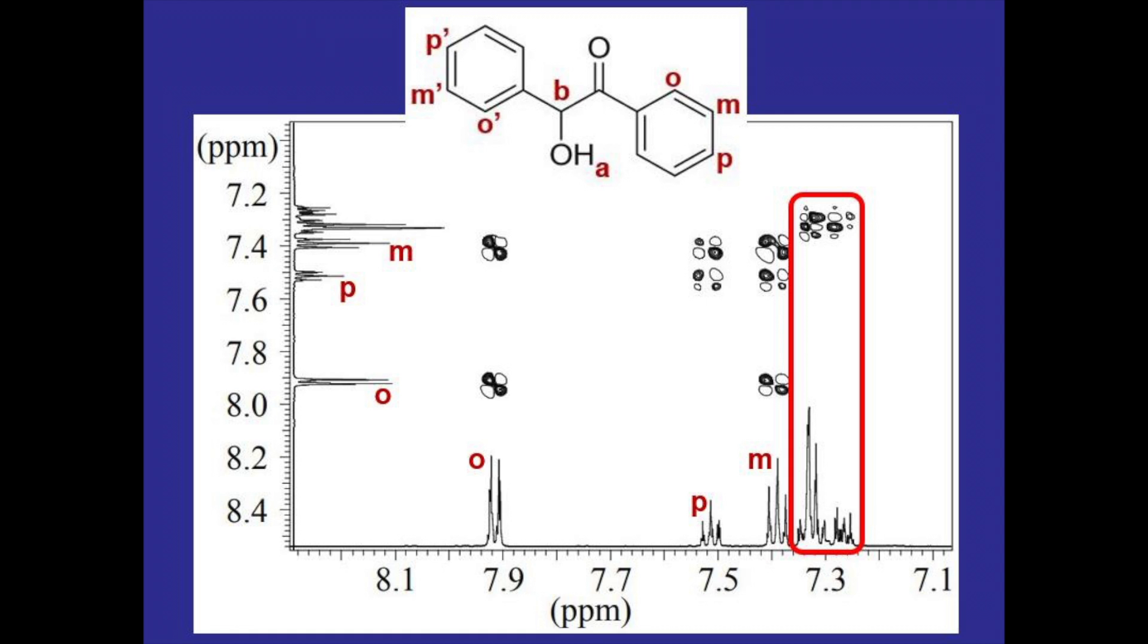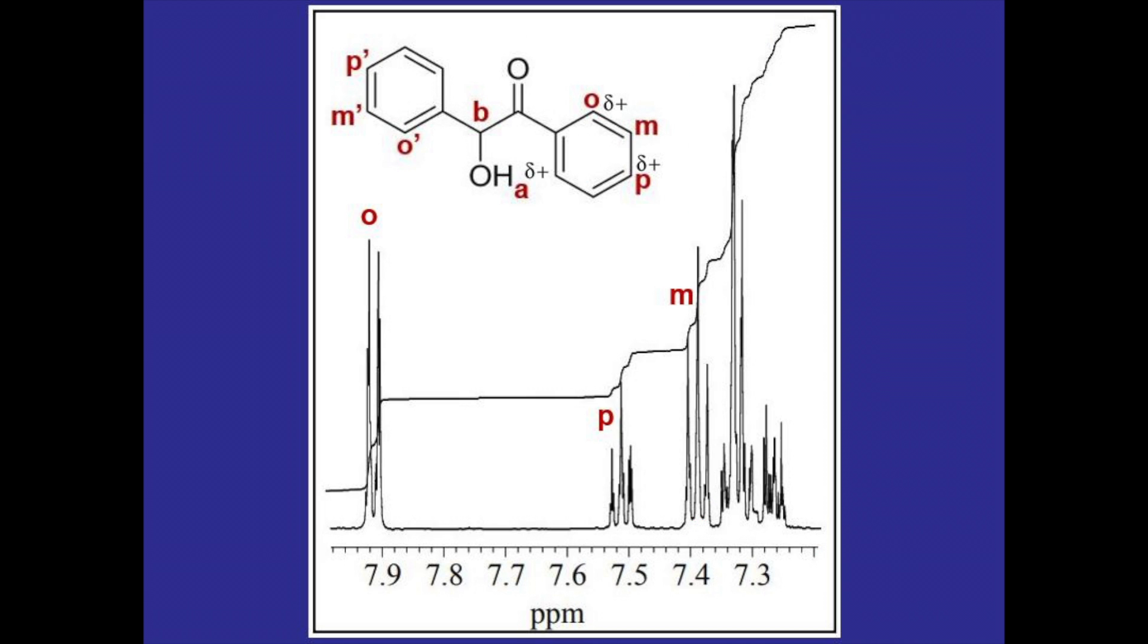The peaks are in the aromatic range so we know that they're going to be for O', M', and P' but to figure them out I'm going to look back at the zoom in. It looks like there are only two peaks left for the three hydrogens so there's got to be overlap somewhere.